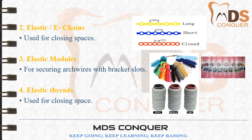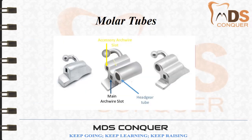Elastic modules are used for securing the arch wire with the bracket slots and are available in various colors; transparent elastic modules are also available. Elastic threads are also used for closing space or for tying different attachments with the arch wires.